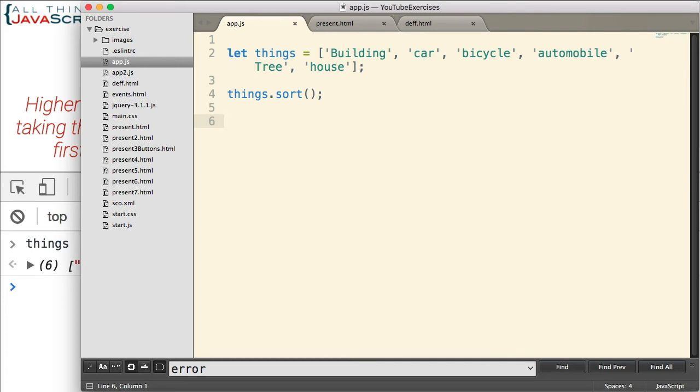So the function we pass in needs to return a negative number, a positive number, or a zero. So one of three values. And then sort will use that to determine the order it places the items of the array in.